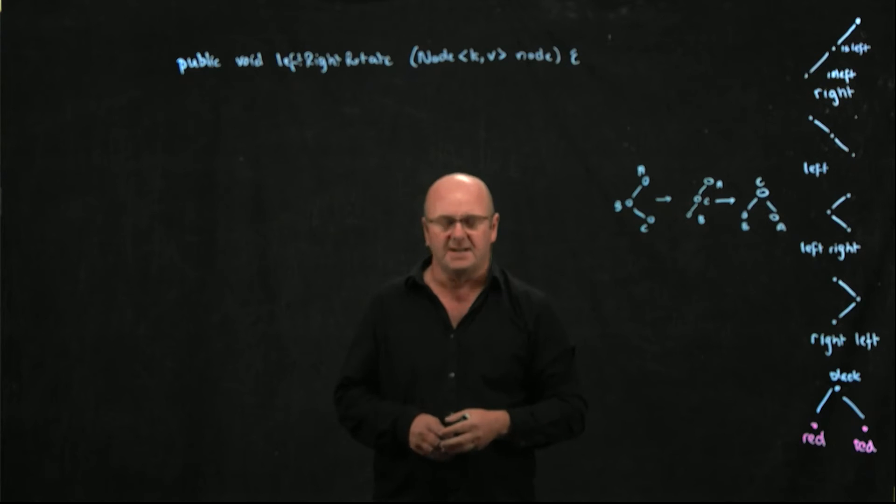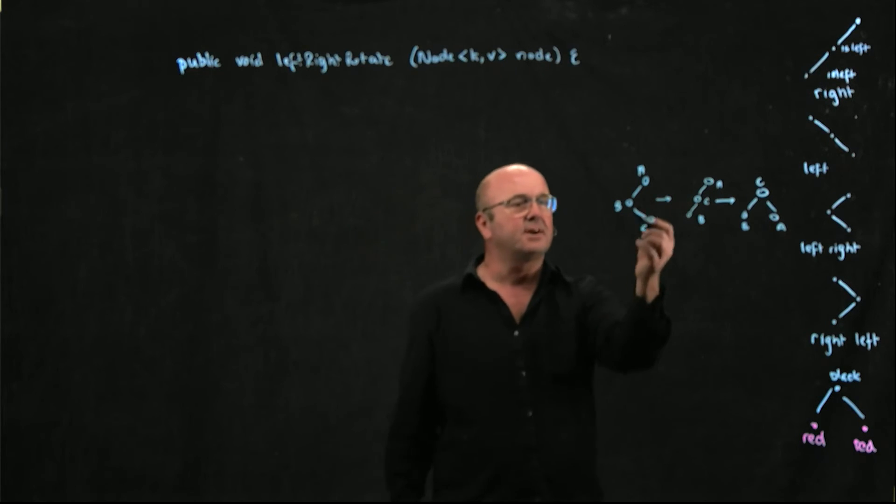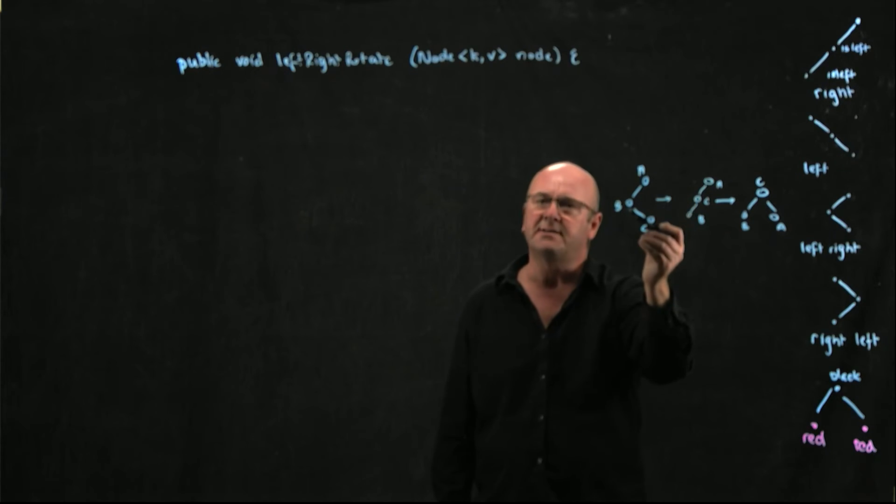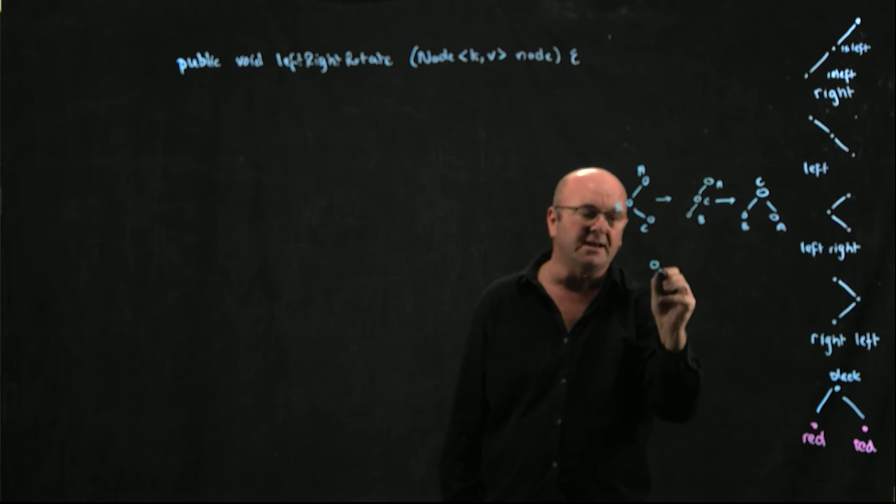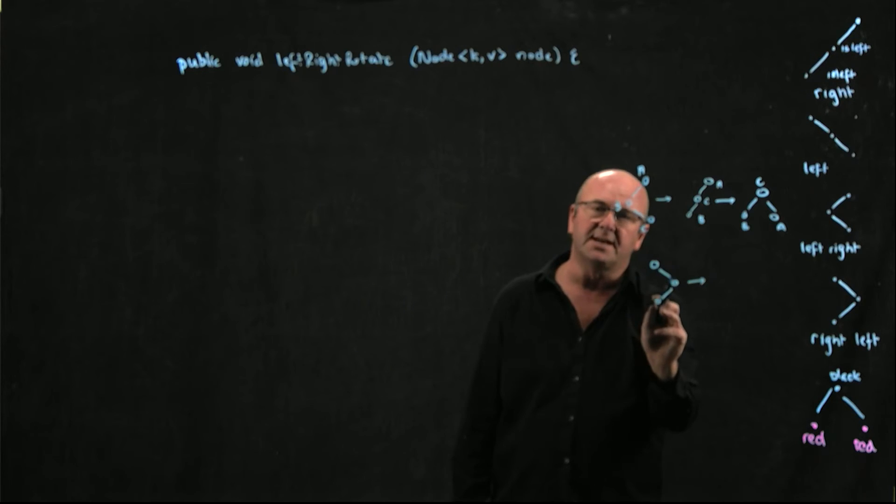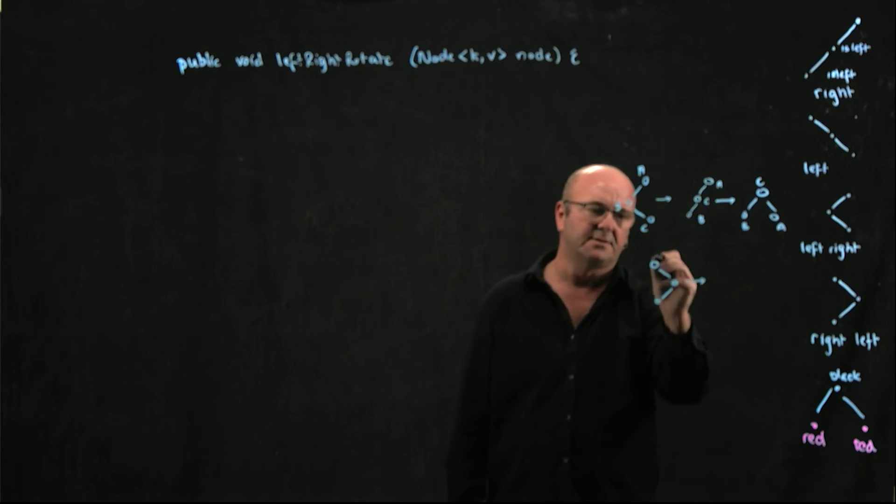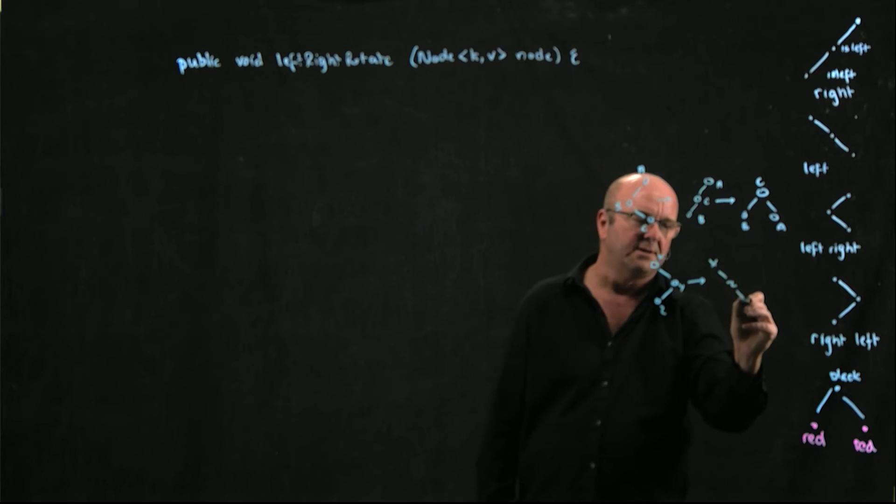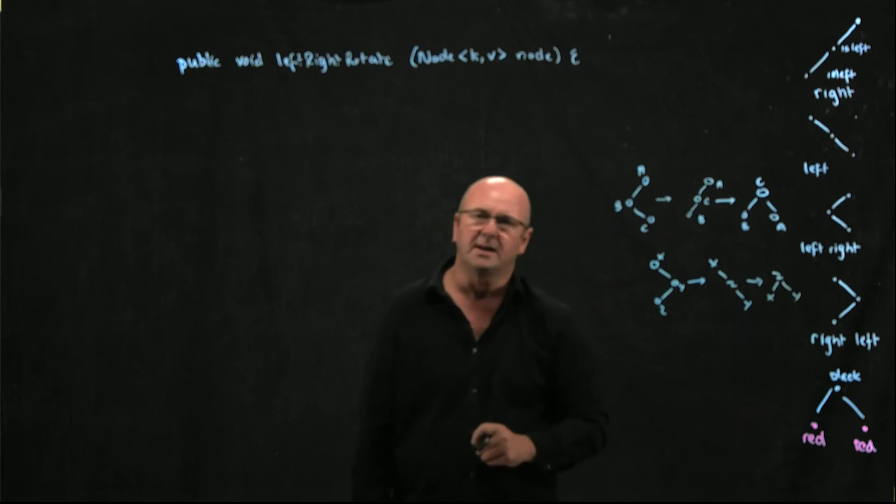So in a left-right rotate the first thing we're going to do is we're going to rotate the parent. And the parent is the grandparent's left child in a left-right rotate. In a right-left rotate, the parent that we rotate is the grandparent's right child. X, Y, Z. We rotate the parent to end up with X, Z, Y. And then eventually we rotate the grandparent in a right-left rotation.